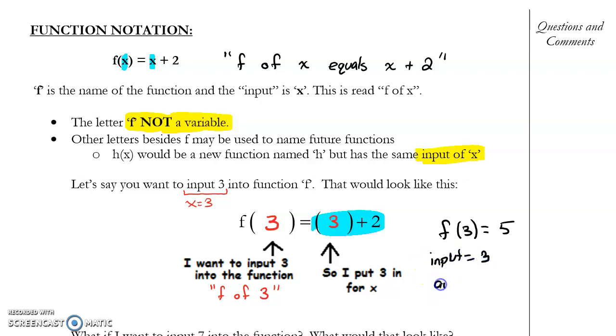Input 3, output is 5. X is 3, y is 5, something like that. f of x is a different way of writing y. It's using function notation, and we'll talk a lot throughout the rest of the year about why it might be called that or used this way.